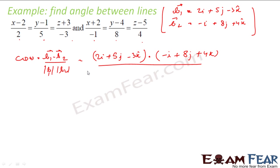By magnitude of b1 will be root of 2 square plus 5 square plus minus 3 square. And here magnitude of b2 will be minus 1 square, 8 square, 4 square.